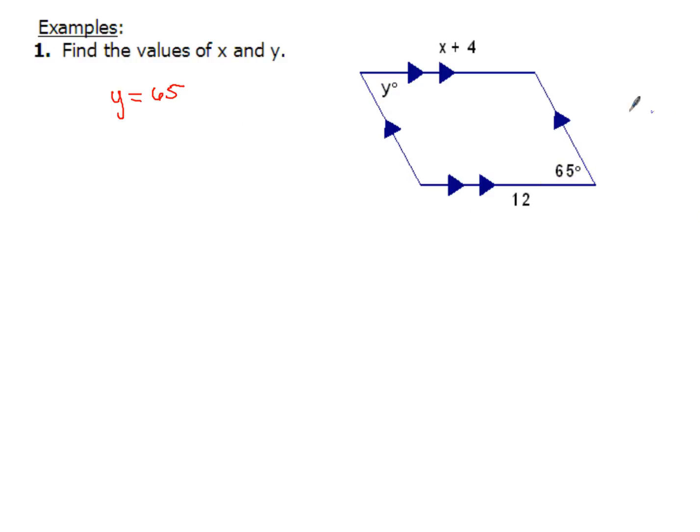Now one of my other characteristics, opposite sides of a parallelogram are equal, which means x plus 4 is going to be equal to the side that's 12. Now when I subtract 4 from both sides, I'll end up with x equals 8. So I get a value for 8 for my x, and my y has a value of 65. That's it. Pretty straightforward stuff.